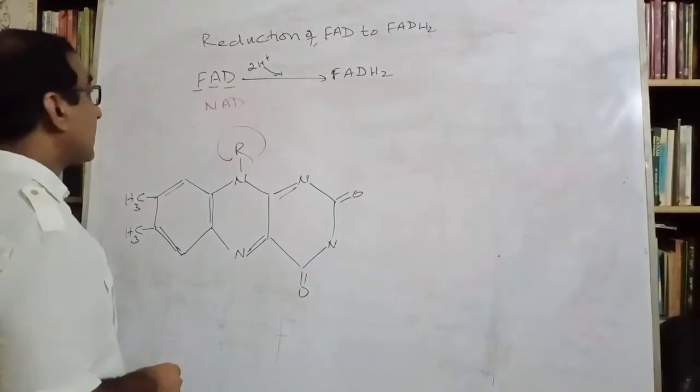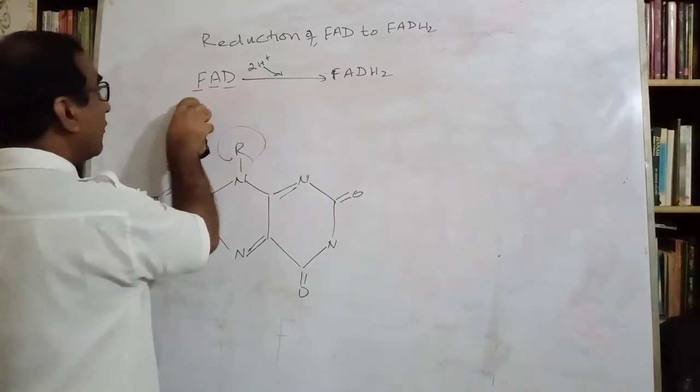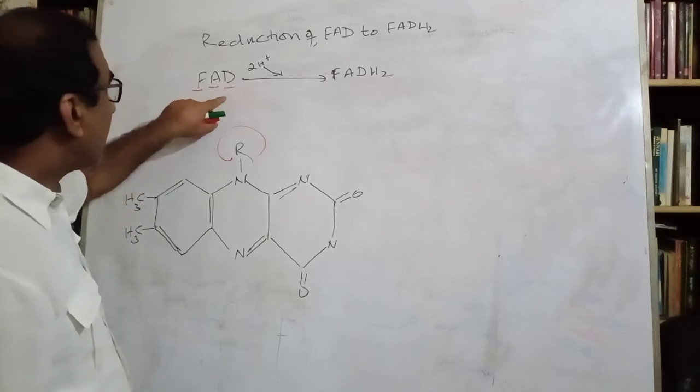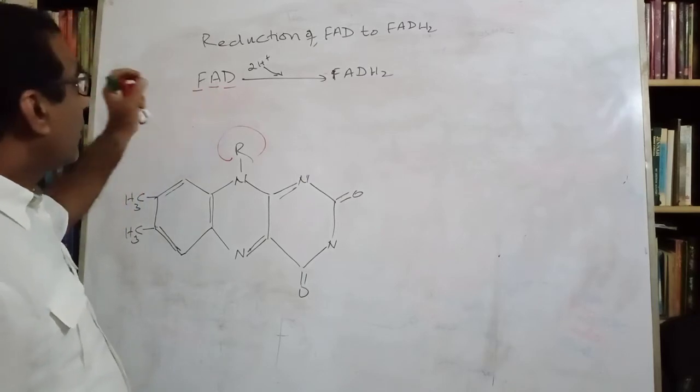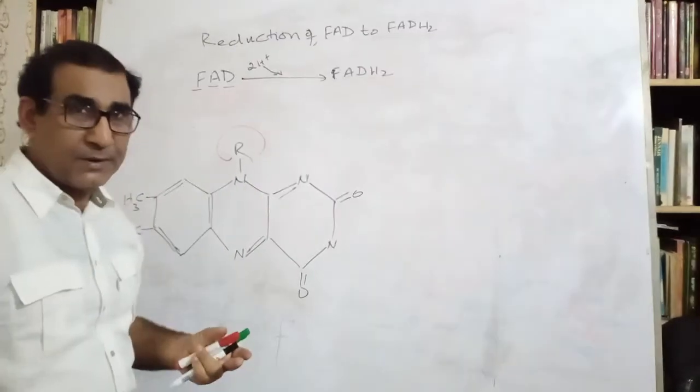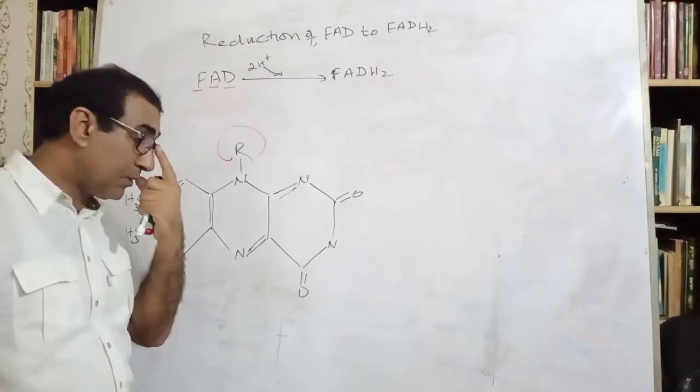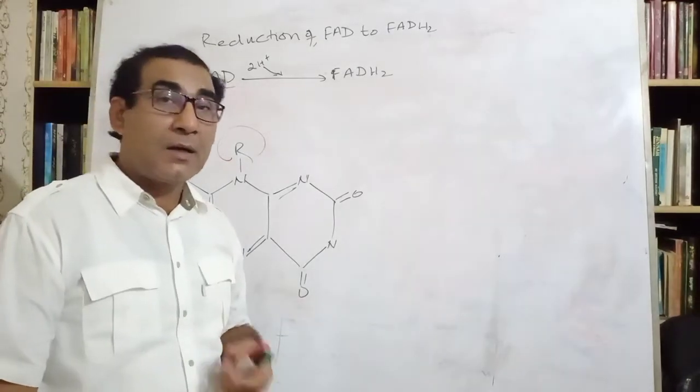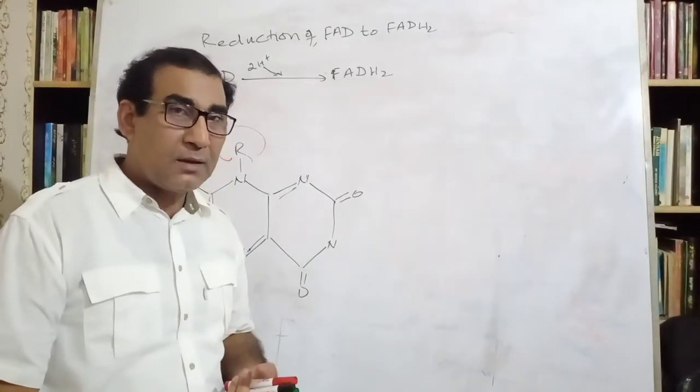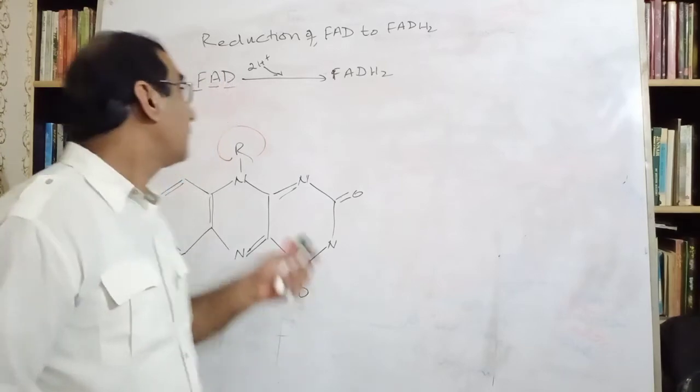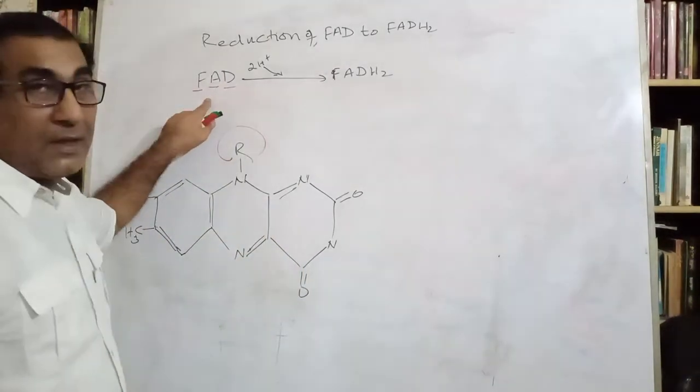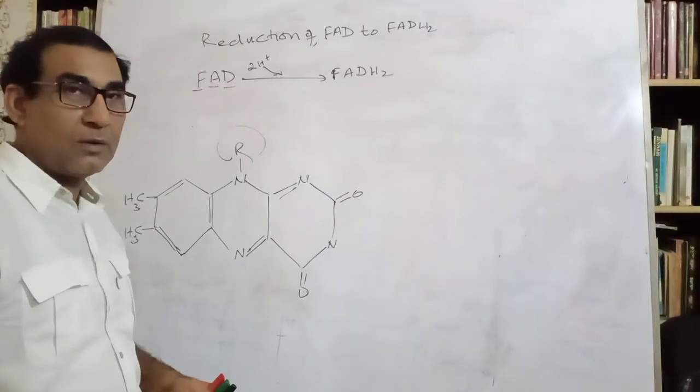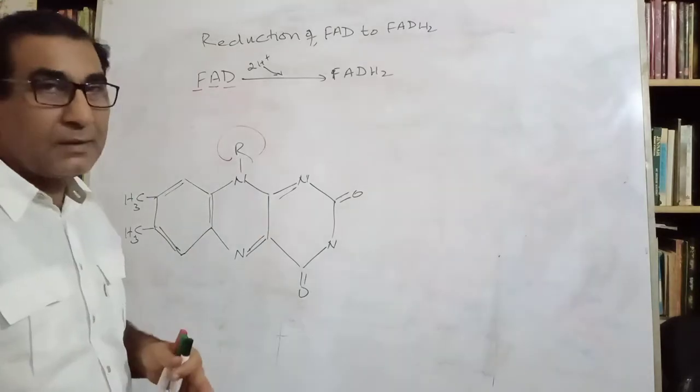So this coenzyme, Flavin Adenine Dinucleotide, this coenzyme helps many enzymes during the biochemical reactions, as you might have studied in case of glycolysis, Krebs cycle, et cetera. During Krebs cycle, this Flavin Adenine Dinucleotide, it reacts. It helps the enzymes.